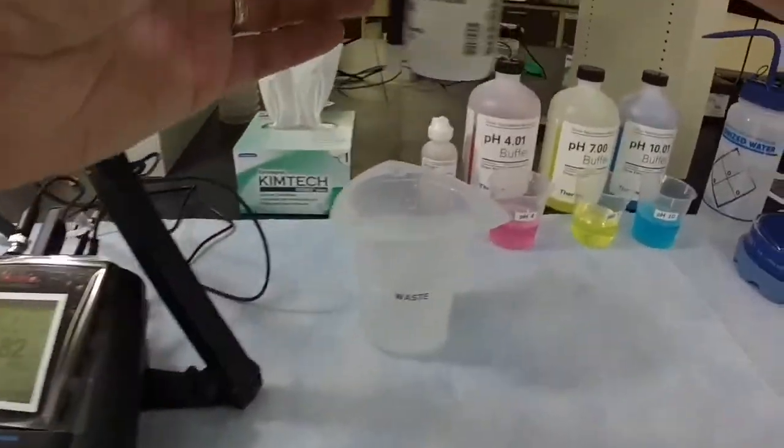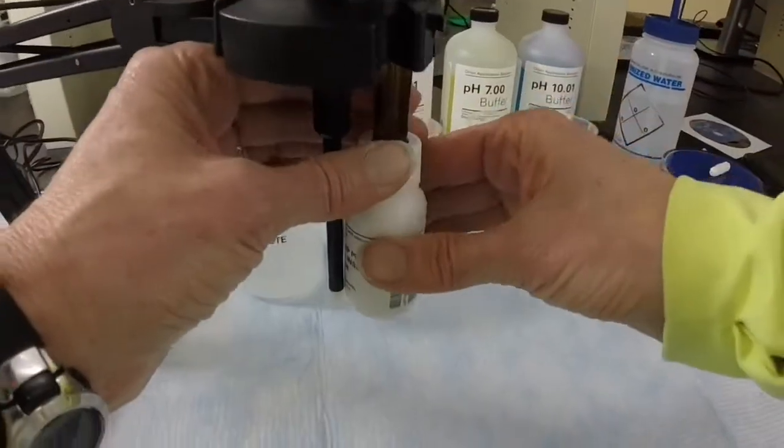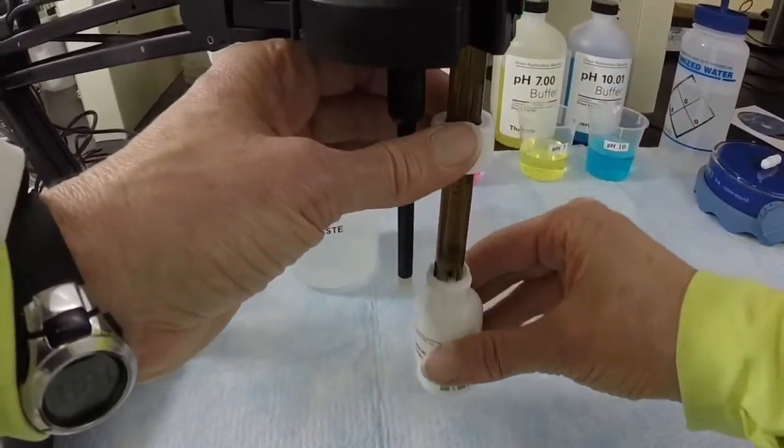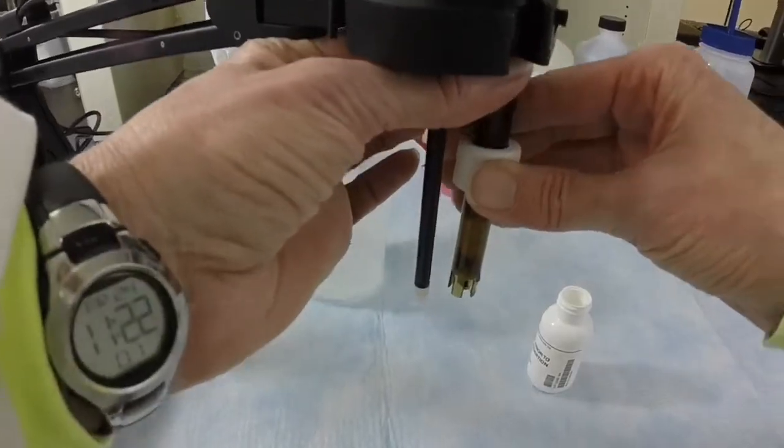To get started, we need to remove the electrode storage bottle from the pH electrode by first unscrewing the top, removing the bottle, and then the cap.